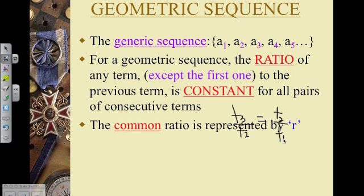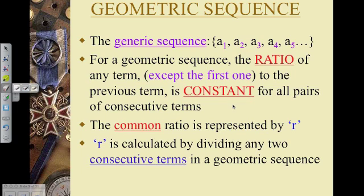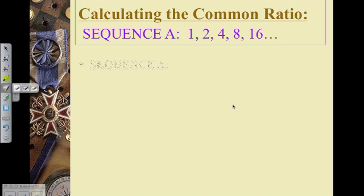The common ratio is always represented by the term R. However, all the other terms in the formula are going to remain the same. For example, A still represents the first term, and R is calculated by dividing consecutive terms in the geometric sequence.